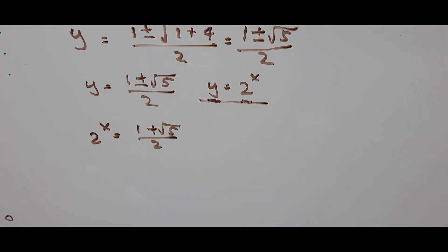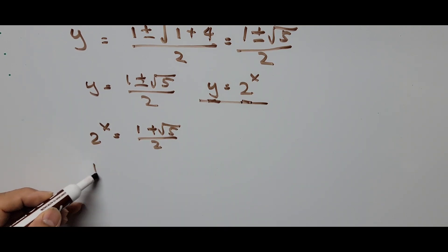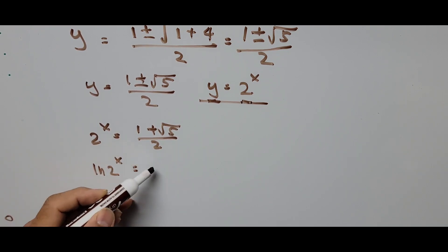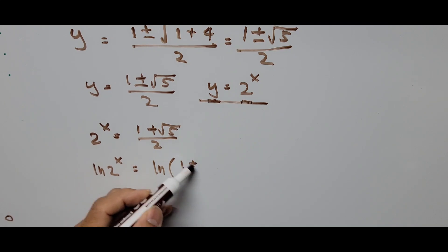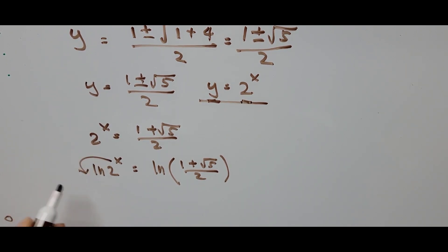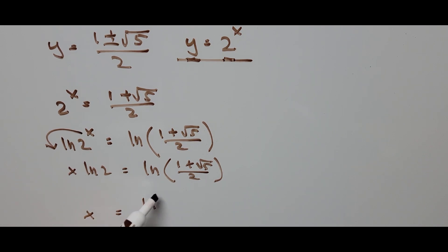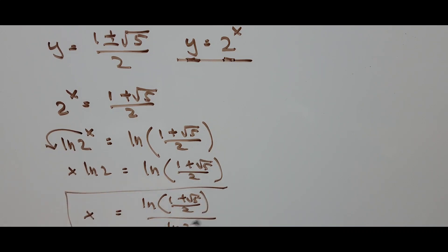To extract the value of x, we take the natural logarithm on both sides of the equation. So ln(2^x) equals ln((1 + √5) / 2). Therefore, x equals ln((1 + √5) / 2) divided by ln(2). This is the exact value of x.